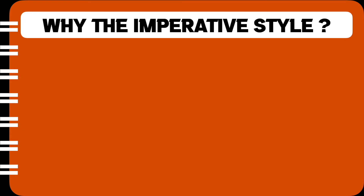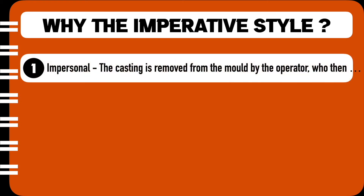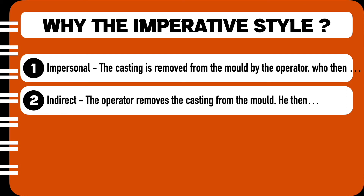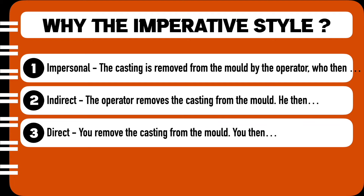Let us understand what the imperative style is and why it is the style of choice for good instructions. There are many ways you can frame a sentence. The first example is the impersonal style: 'The casting is removed from the mould by the operator who then...' — this seems a very roundabout way of talking to the reader. The next example is the indirect style, a slight improvement: 'The operator removes the casting from the mould, he then...' Again, it is not talking directly to the user.